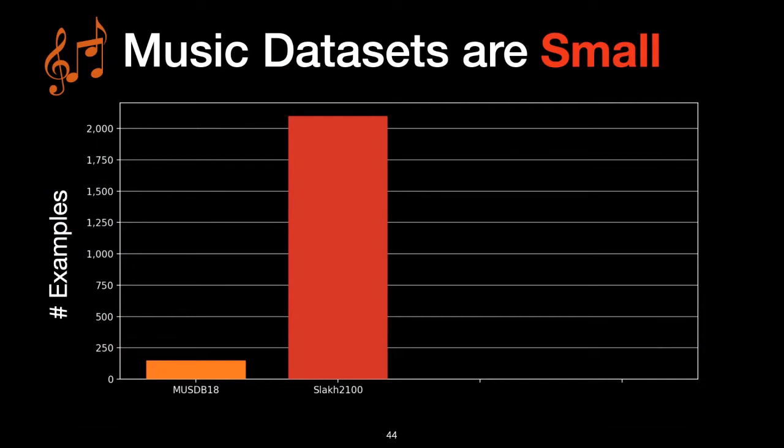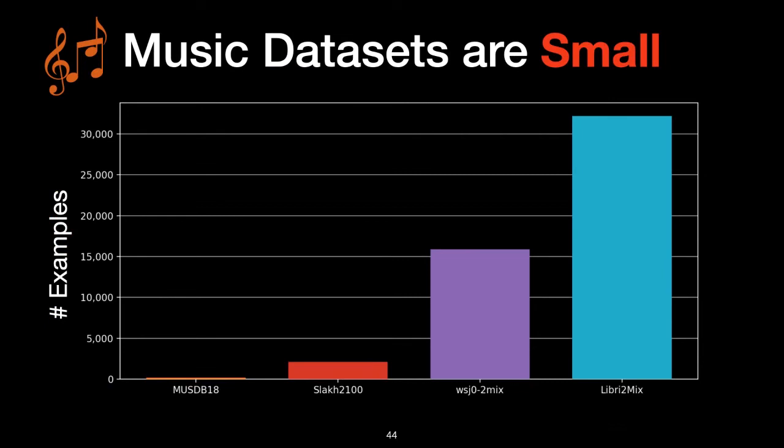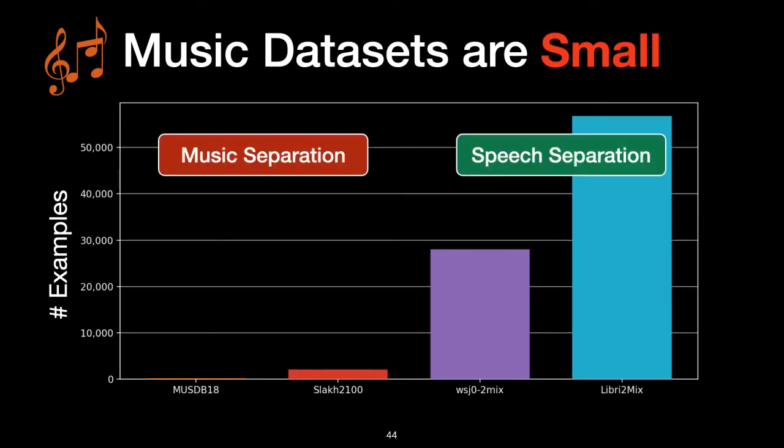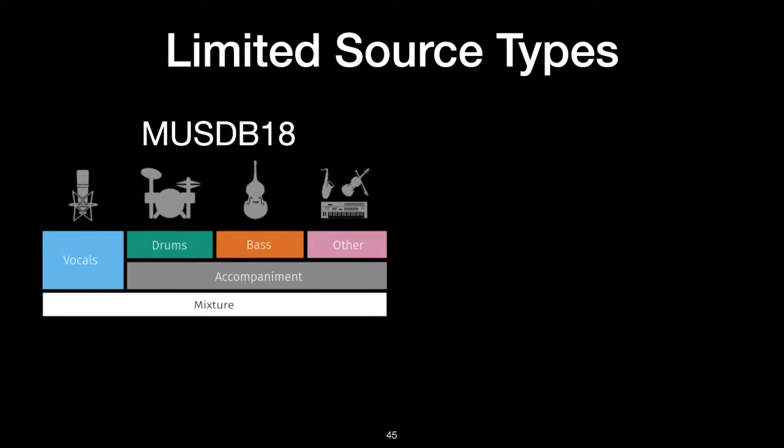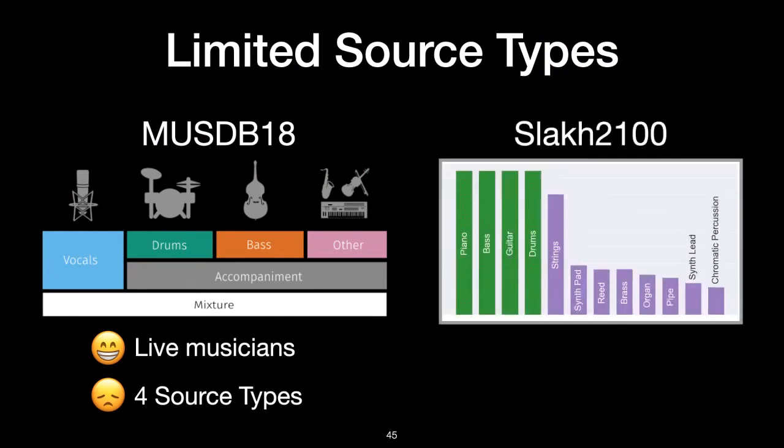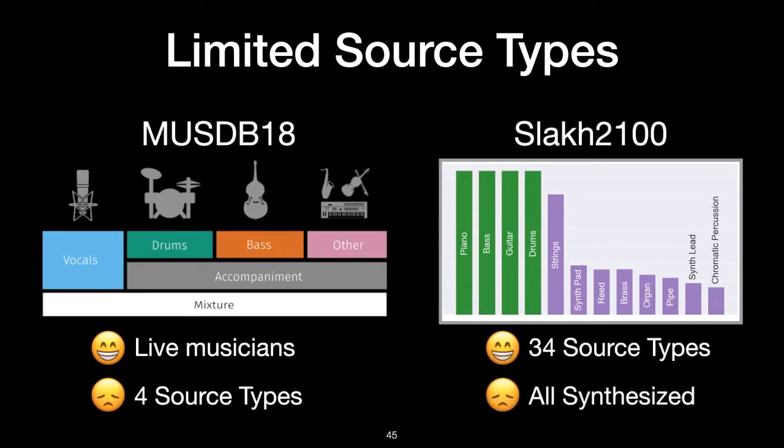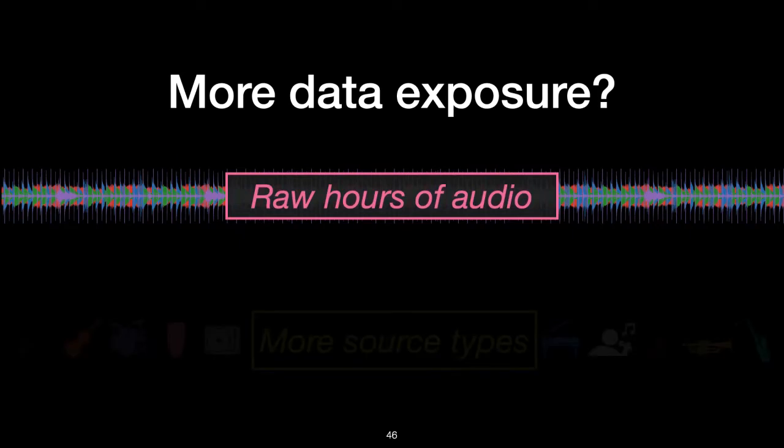One problem with the music separation world is that these music data sets are small. The standard data set MusDB18 is on the left of this chart, and Slakh2100 is just to the right of that. If we compare these two to the speech data sets, we can see that our standard music data sets are tiny. Speech data sets, we can argue that speech data sets have much less diversity than music data, and on that note, I want to talk about data diversity. While the MusDB data set contains recordings of live musicians, it only supports four source types: vocals, drums, bass, and this fourth catch-all source that combines every other source under the sun, which is called the other source. On the other hand, the Slakh data set has support for 34 instrument types, but all of the audio is synthesized, so it's not clear how well models trained on it will generalize to recordings of live musicians. So one of the problems with source separation is how do we get access to models that have been exposed to more data? And by more data, I mean both in terms of raw hours of audio and more source types.